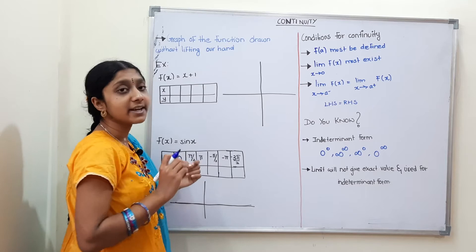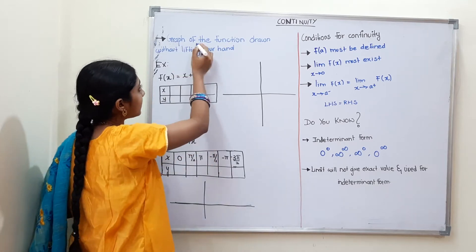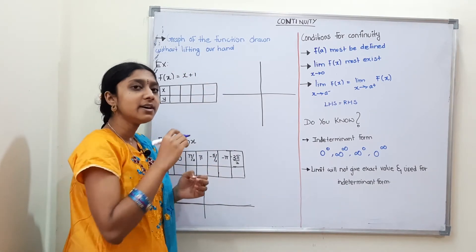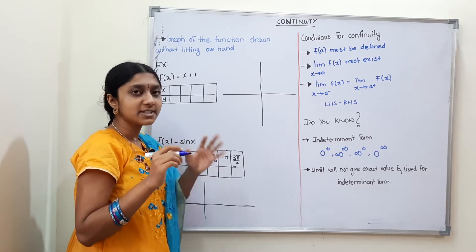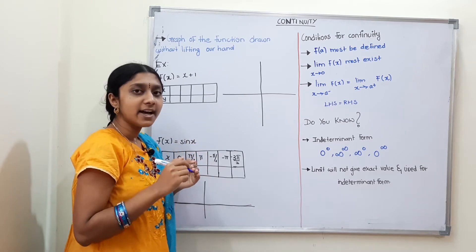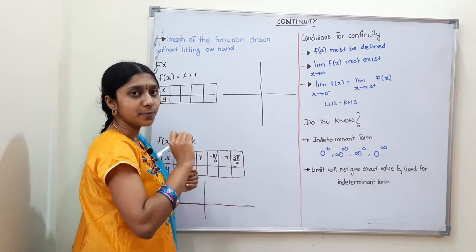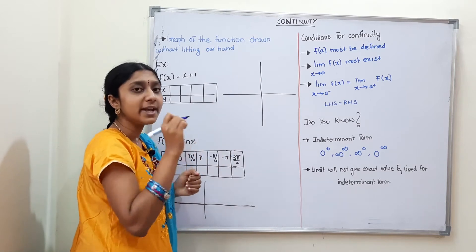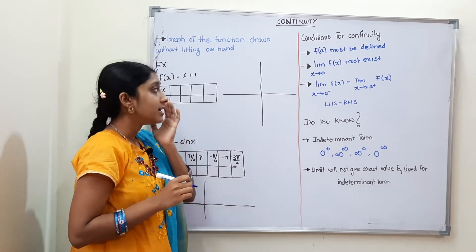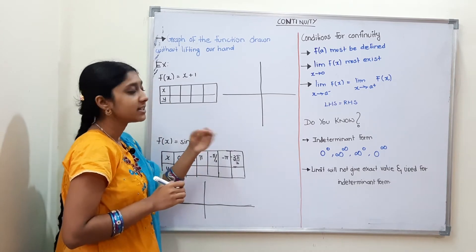The first topic is Continuity. What is continuity? A graph of a function drawn without lifting your hand. Simply put, if you have a function and you can draw its graph without a break, that is continuity. If there is a break, the function is not continuous. Now we have a function and we can see the graph is continuous.